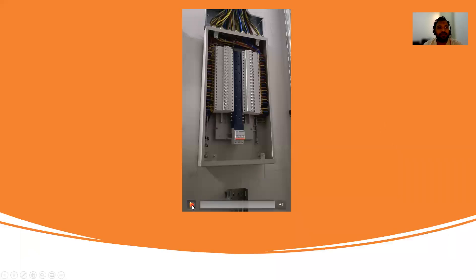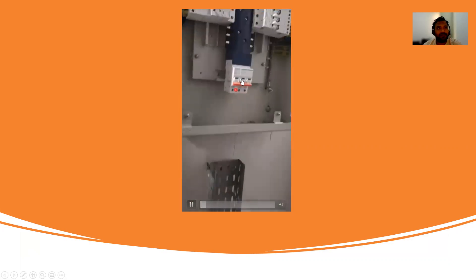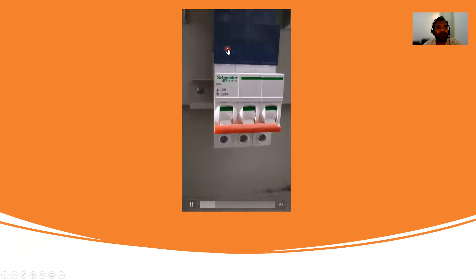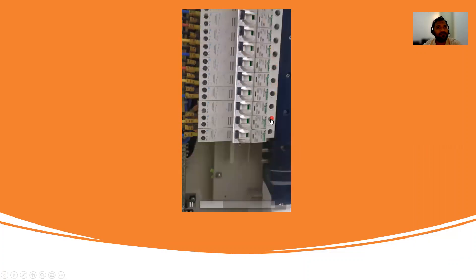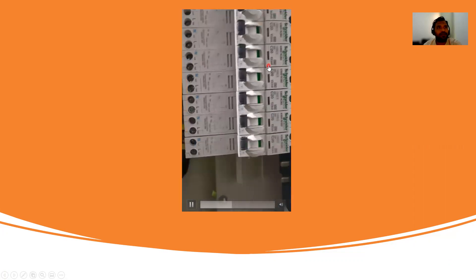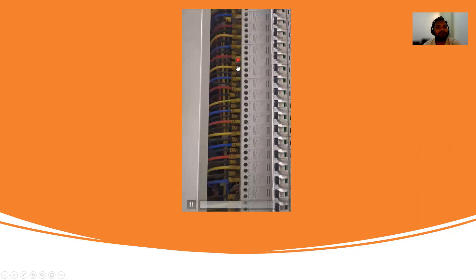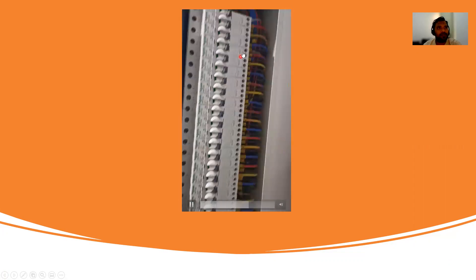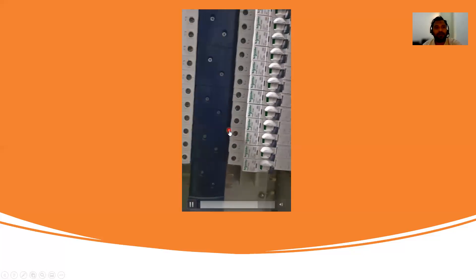Let us look at a distribution board practically. Here you can see the main incomer, the isolator, the neutral section, and the RCBOs — for example, 20-ampere RCBOs with outgoing terminations. This is also how the earth bus bar looks inside the compartment.